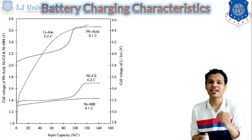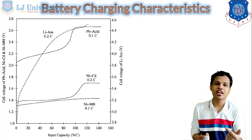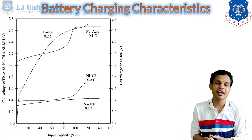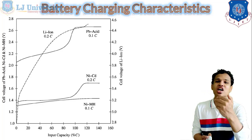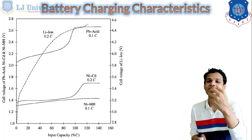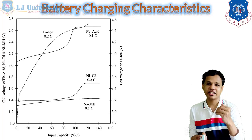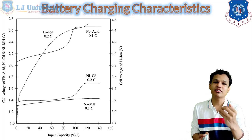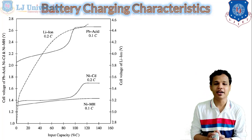Looking at the charging characteristics, first you can see for the nickel metal hydride battery that the value of the voltage stays almost constant throughout the charging of the battery. It is being charged at the 0.1C current value, which is the representation of the charging current during battery charging. So it will be charged at 0.1 times the rated current of the battery.